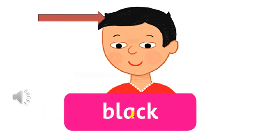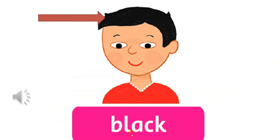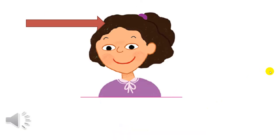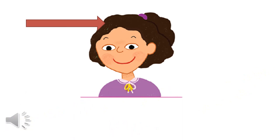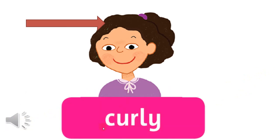Next one: black. Now let's spell: b-l-a-c-k. Black. One more time — black. Good. Curly. Now look at the word, let's try to spell with me: c-u-r-l-y. Curly.